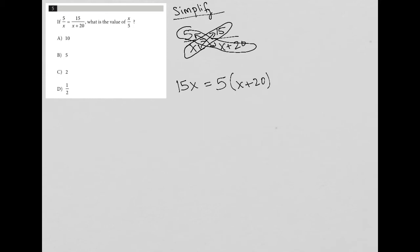I simplify that further so I have 15x. The 5 distributes to each term inside of the parentheses, so 15x is equal to 5x plus 100.